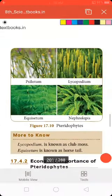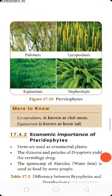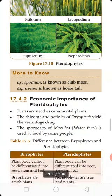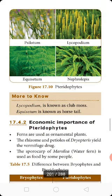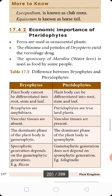Nephrolepis plants are commonly called ornamental plants. They have very attractive color and body structures, colorful ones. Lycopodium is known as club moss, and Equisetum is known as horsetail. This leads us to the economic importance of pteridophytes.